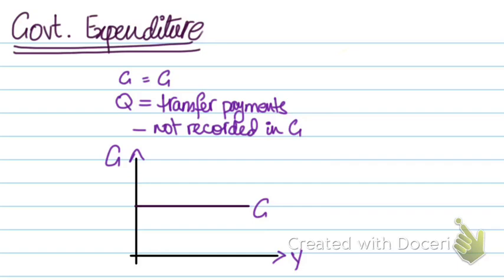Now we've talked about all components of aggregate expenditure in a closed mixed economy: consumption, investments, and government expenditure. In the next video, we'll talk about aggregate expenditure as a whole and how to sketch the aggregate expenditure function.